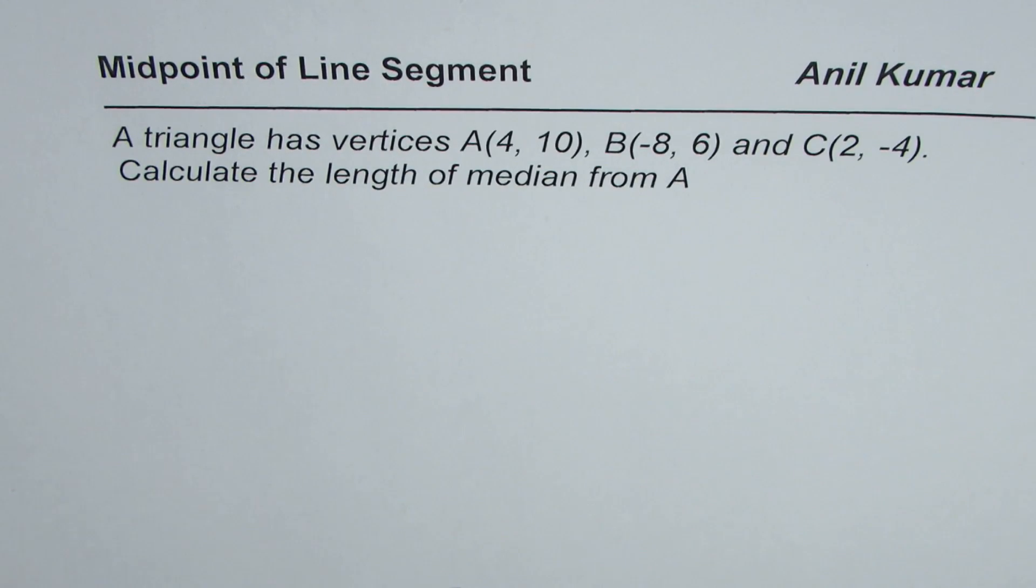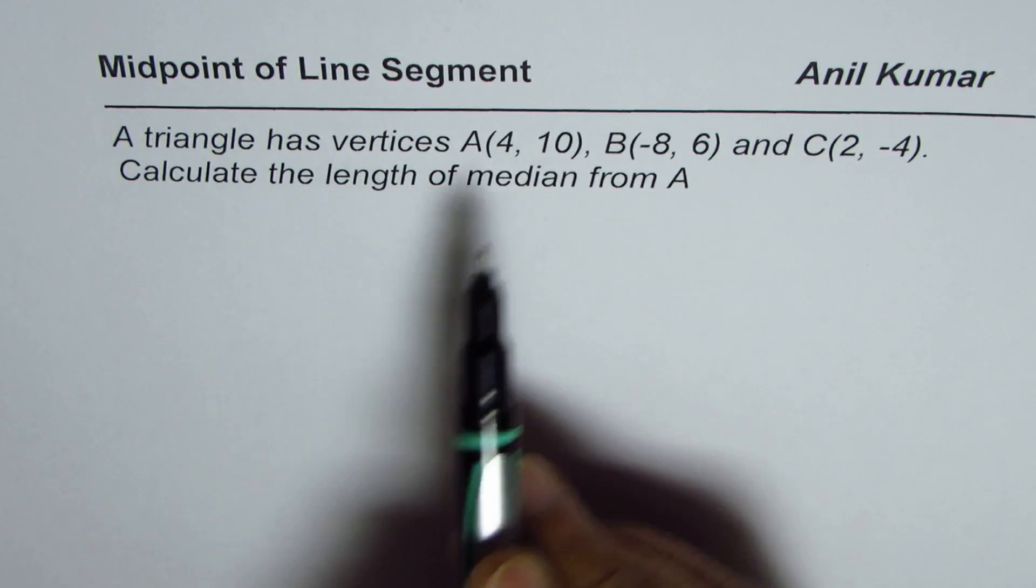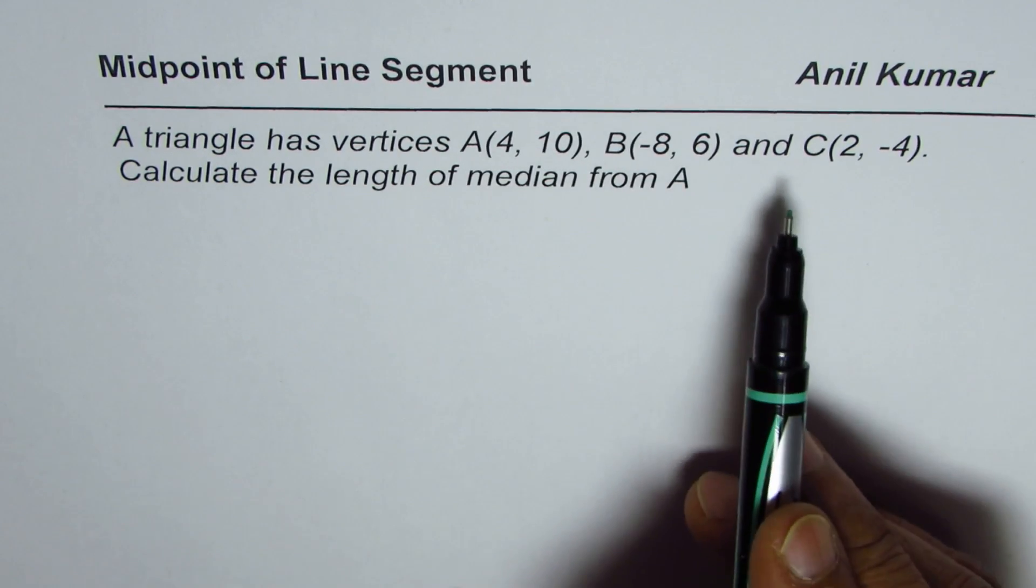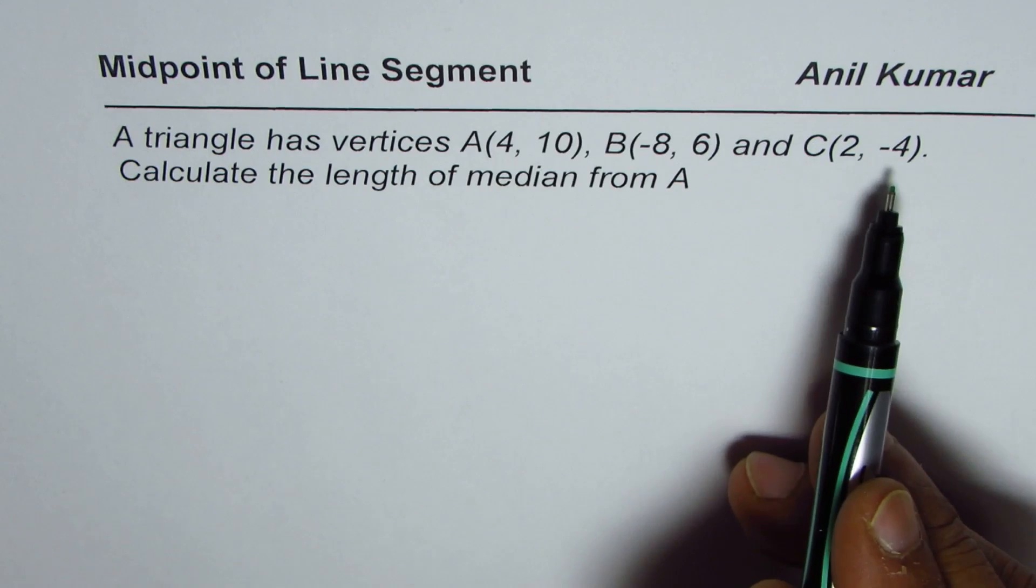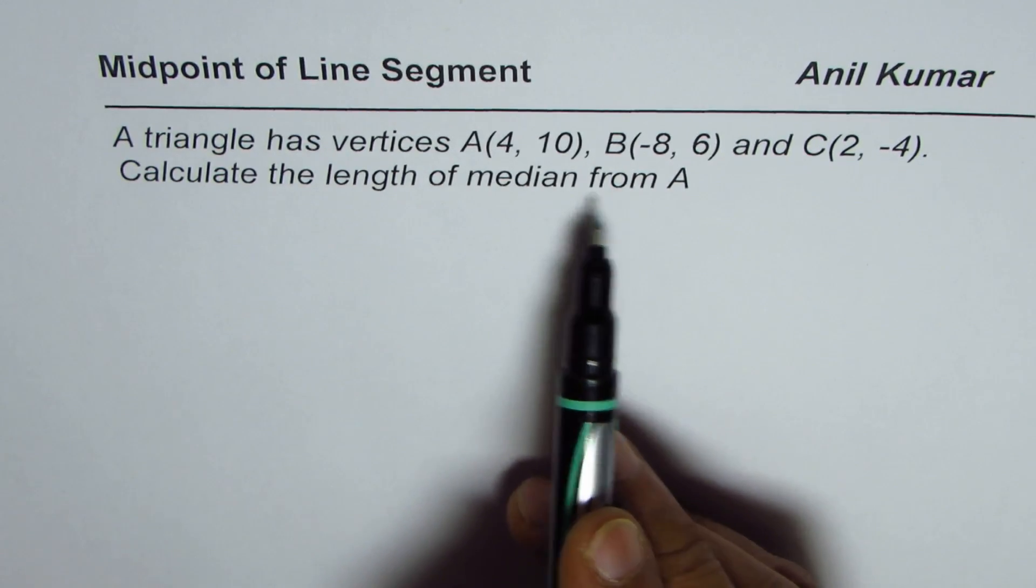I'm Anil Kumar. We are exploring midpoint of line segment and here are a few challenging questions from this unit. The question here is: a triangle has vertices A(4,10), B(-8,6), and C(2,-4). Calculate the length of median from A.